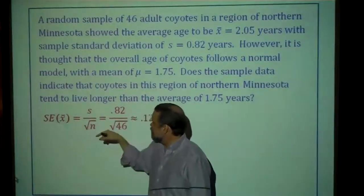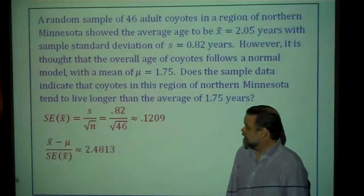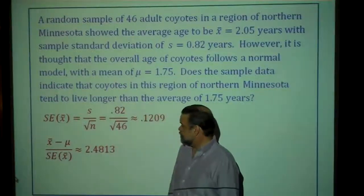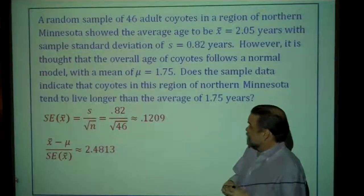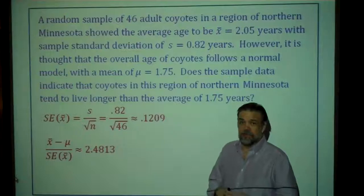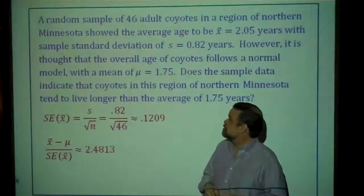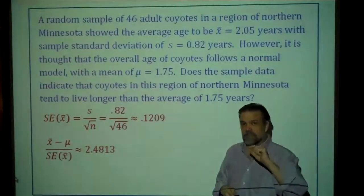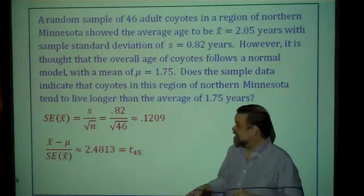Back to our problem. The standard error of x̄ is 0.82 over √46, which is about 0.1209. So our test statistic — (x̄ − μ) divided by the standard error — is about 2.4813. If this were a z-statistic, we'd say 2.4 standard deviations above the mean is really high and we'd have a tiny p-value. However, this is a t-statistic, not a z-statistic — specifically a t with 45 degrees of freedom.